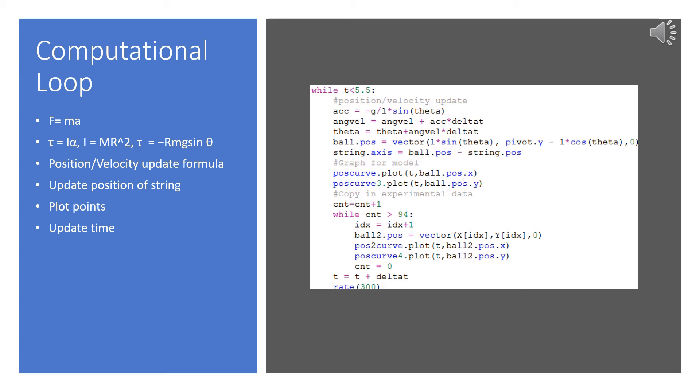Then, using the acceleration, we can update the angular velocity and angle of the pendulum and then use the new angle to find the new position. By multiplying the acceleration by delta t and adding it to the initial velocity, we obtain a new velocity. We can then use this velocity, multiply it by delta t, and add it to the initial theta to obtain a new theta.